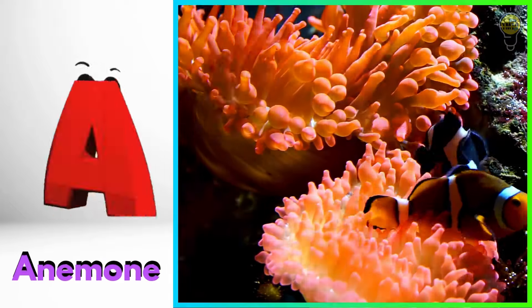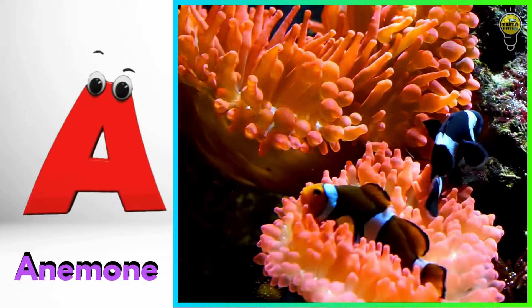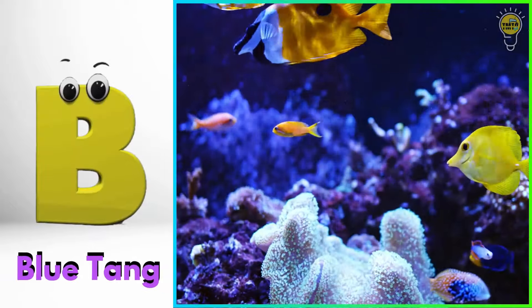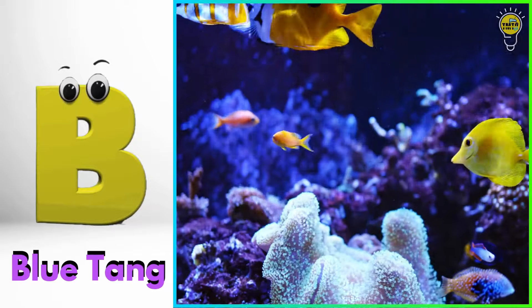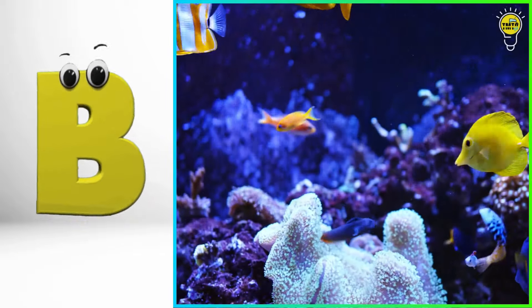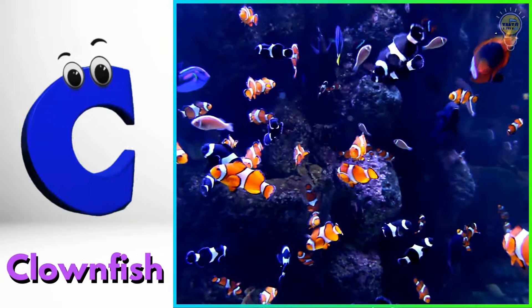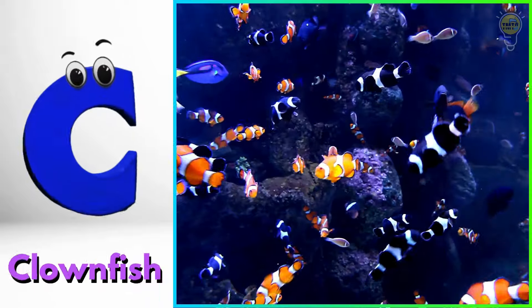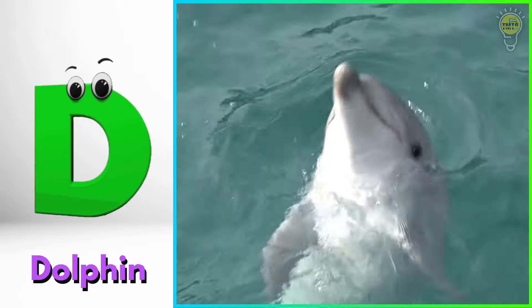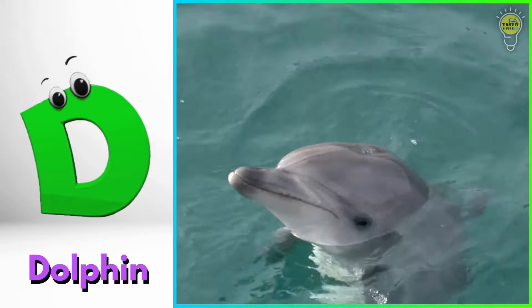A is for anemone. Ah, anemone. B is for blue tang. Buh, blue tang. C is for clownfish. Kuh, clownfish. D is for dolphin. Duh, dolphin.